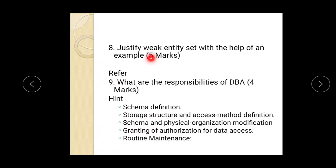Next question: justify weak entity set with the help of an example. Refer to that topic — we have already explained about weak entity and strong entity. A weak entity type is an entity which does not have any key attribute; such an entity is called a weak entity. This is a five-mark question.